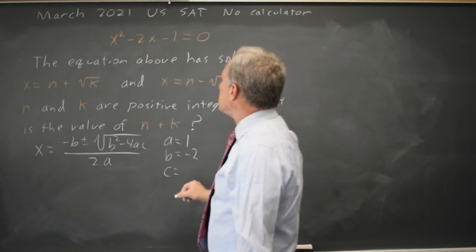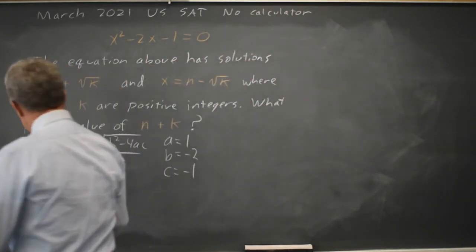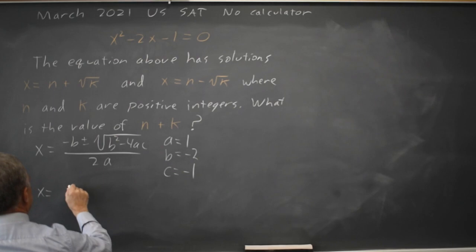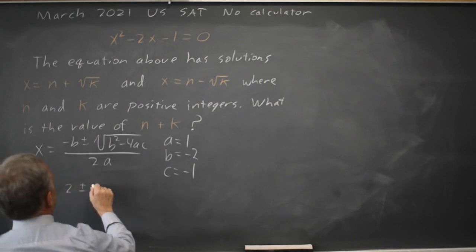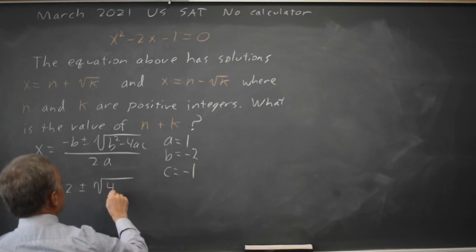C is the constant which is negative 1. So to bring those into this equation I get X equals negative B is minus negative 2 is positive 2 plus or minus the square root of B squared, negative 2 squared is positive 4.